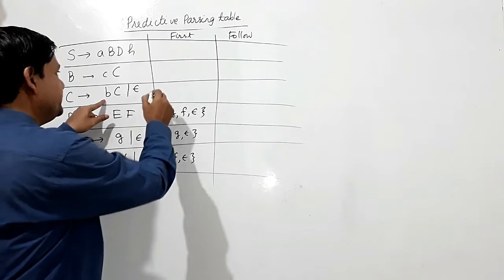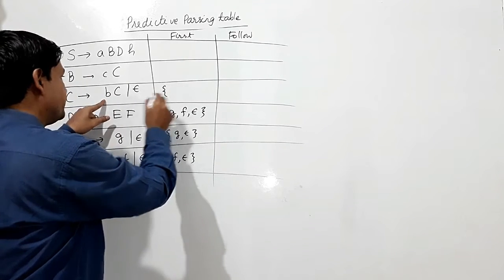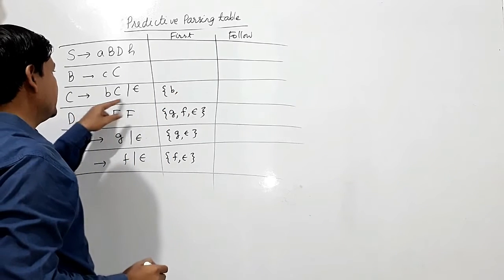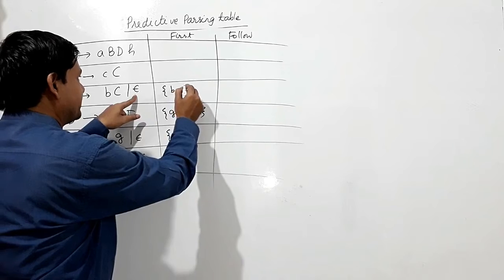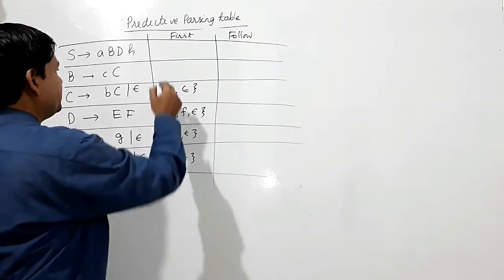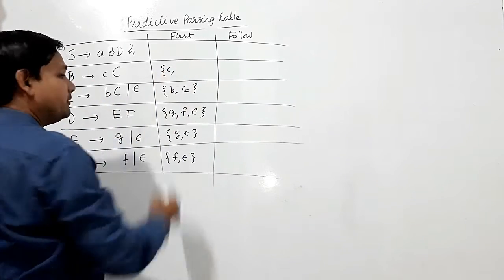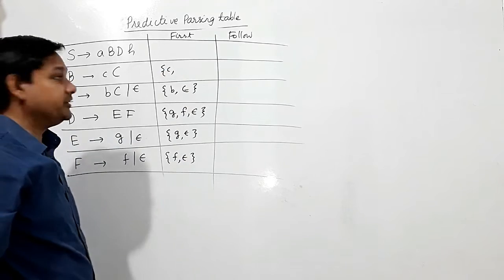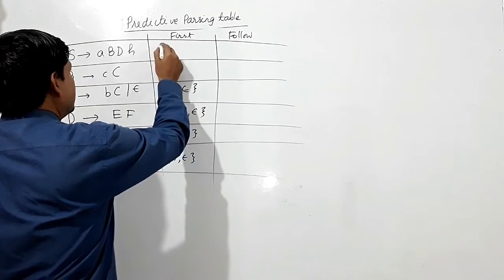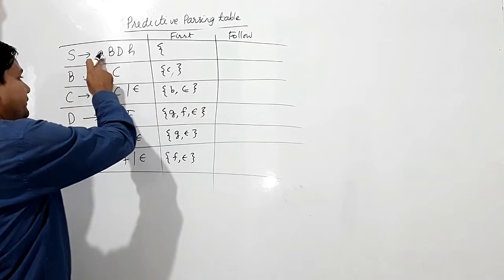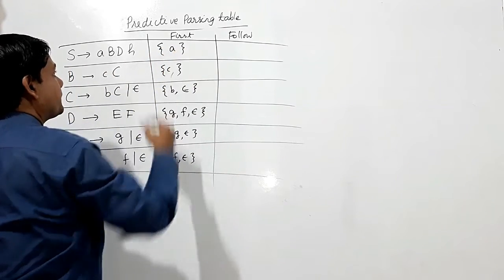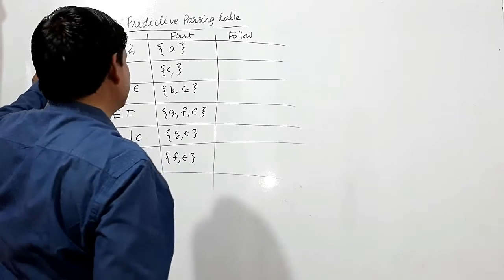FIRST(C) from the production C→BC includes B, and from C→Epsilon it includes Epsilon. So FIRST(C) = {B, Epsilon}. FIRST(B) is C, so FIRST(B) = {C}. And FIRST(S) is A, so FIRST(S) = {A}.